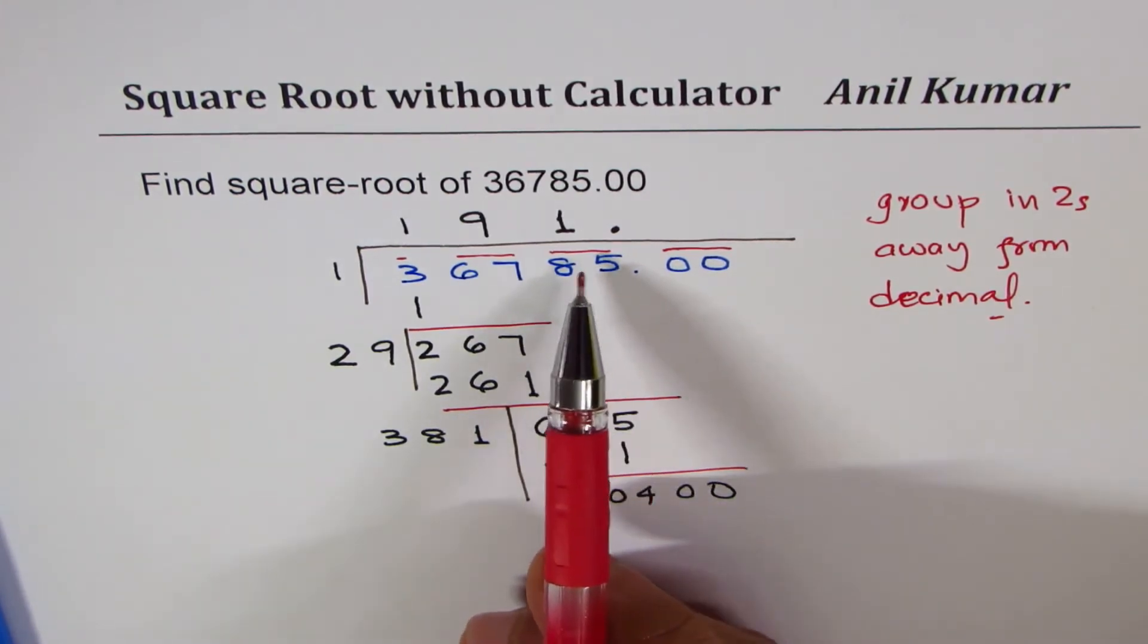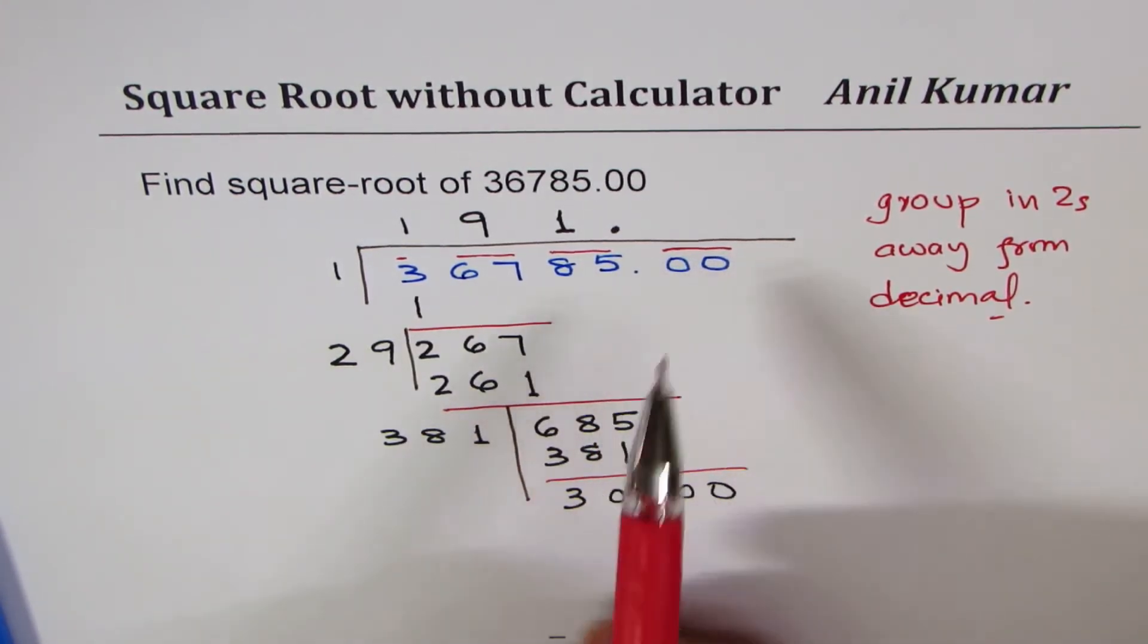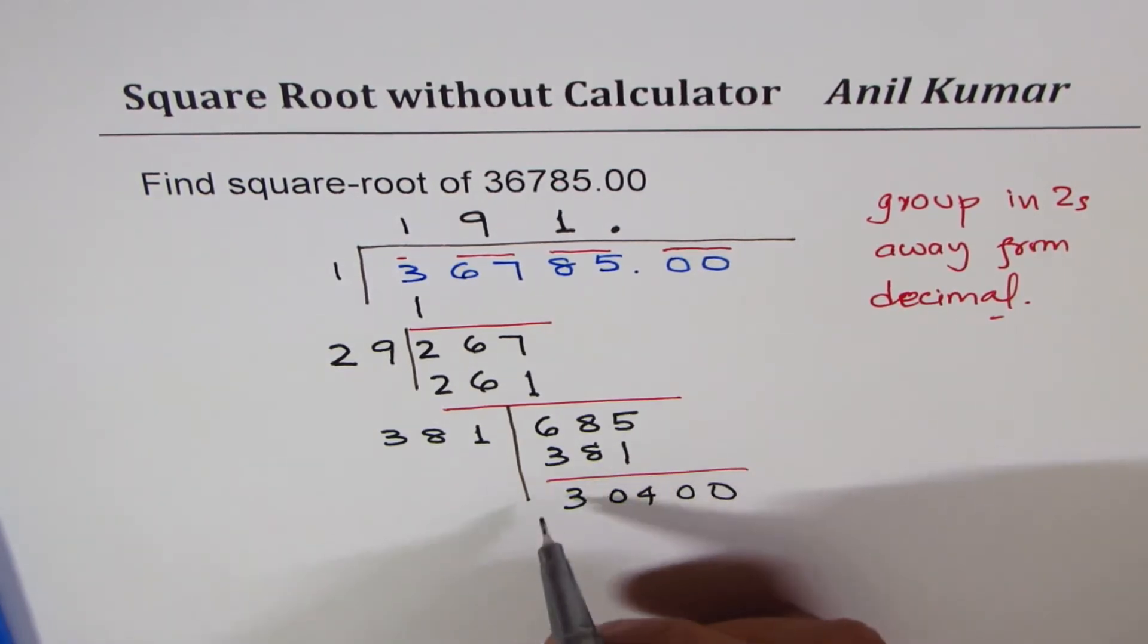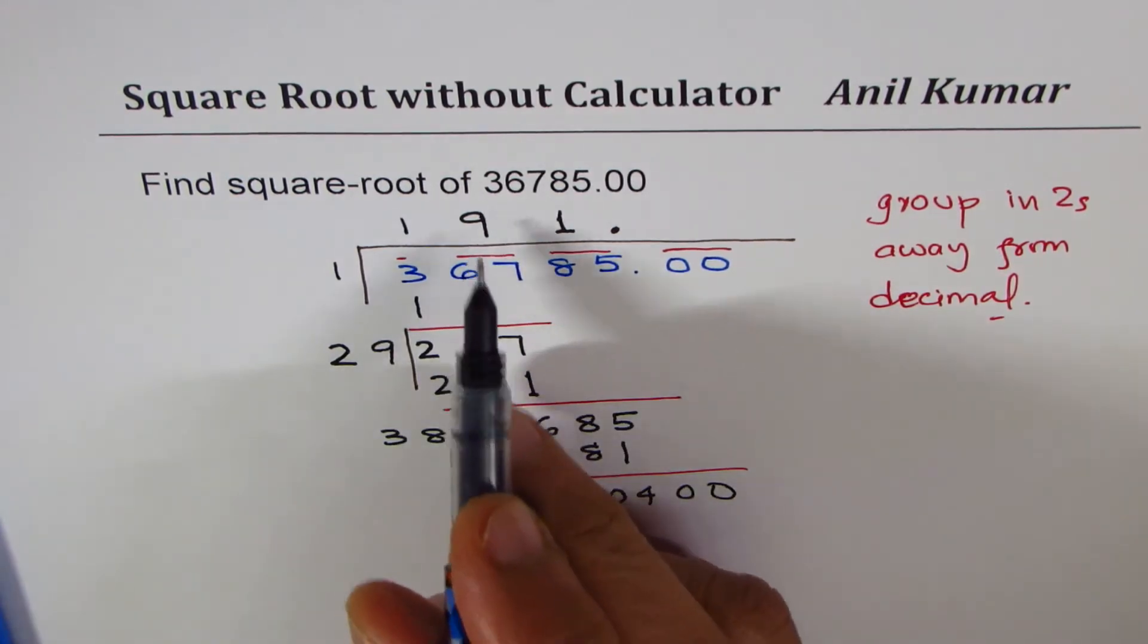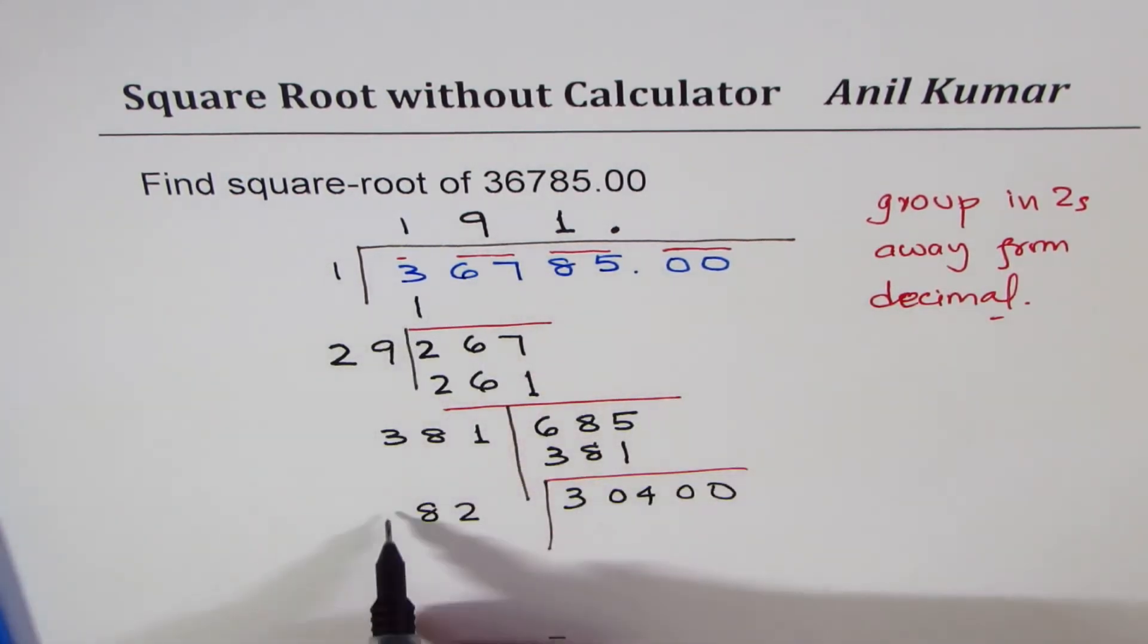Let's continue. Now this time when I divide, I have to do first twice this number. Twice one is two, two times nine is 18, eight and one three.